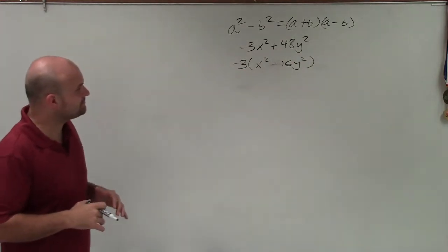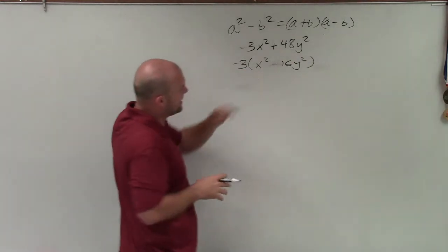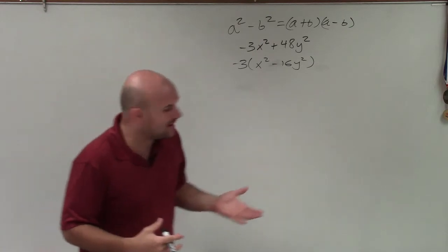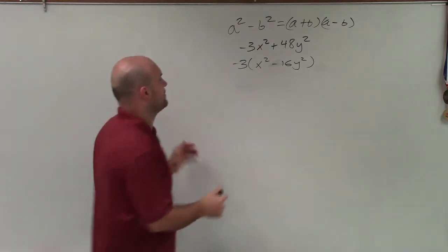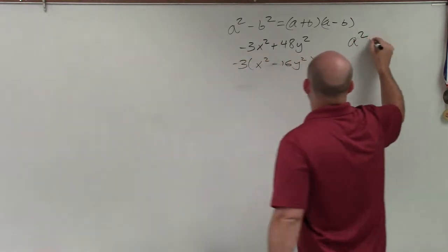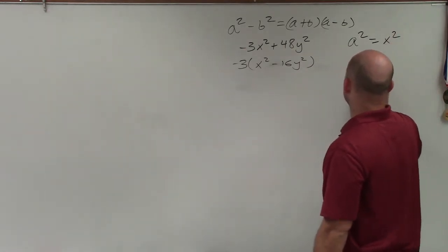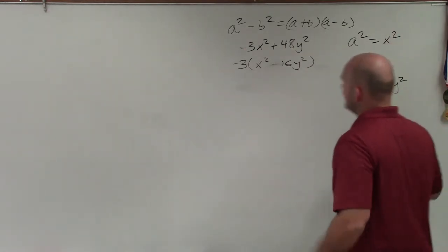So I go ahead and look at my binomial here, and I see, yeah, well, I can write this where I can say that a squared would be x squared, and b squared is equal to 16y squared.